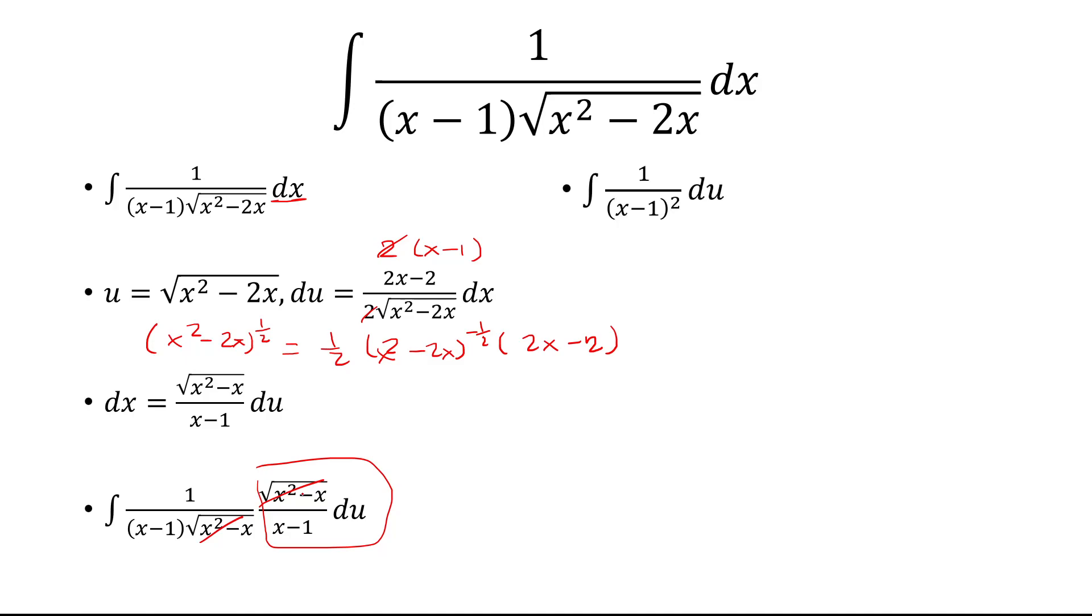So, on the bottom, we have 1 over x minus 1 times x minus 1, which is x minus 1 quantity squared. And if I expand this, I have x squared minus 2x plus 1.